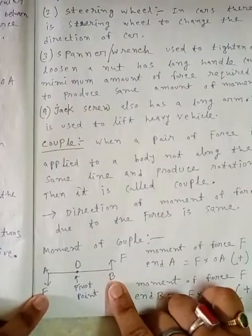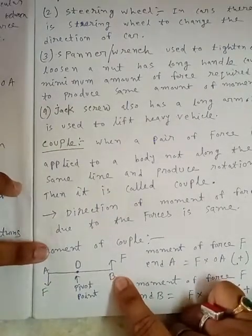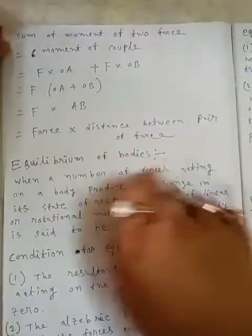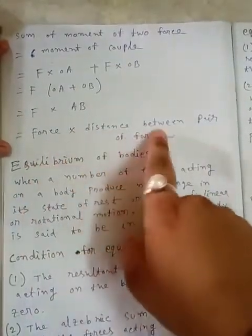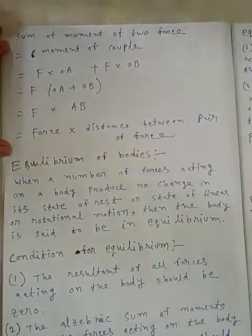You see from here, this is the pair of forces and the distance between the pair of forces is AB. So the formula of moment of couple is force multiplied by distance between pair of forces. Now, move to the next point: Equilibrium.